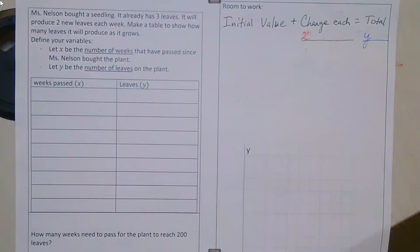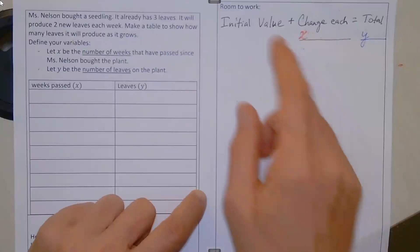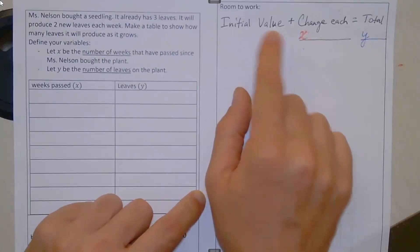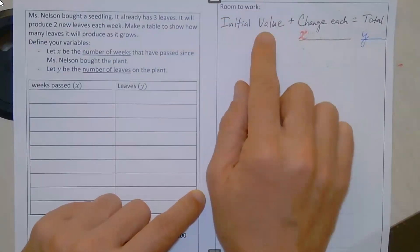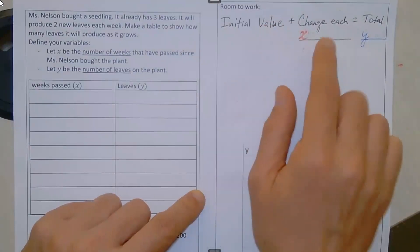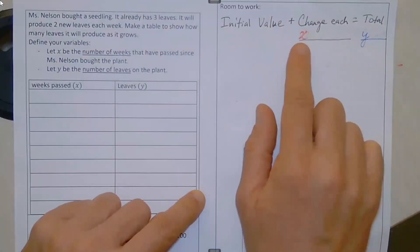You should know that in a linear equation, you have some initial value. It might be zero or it might be something else, but some amount at the beginning of the story. Then you have that amount changing as the units of X increase.